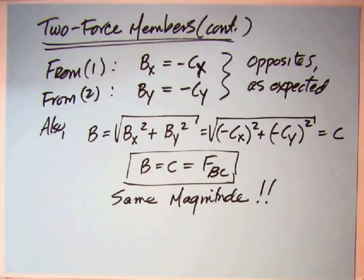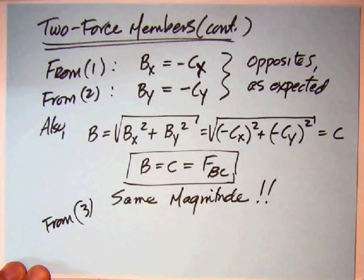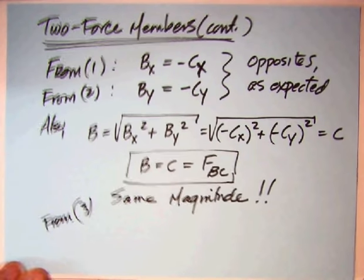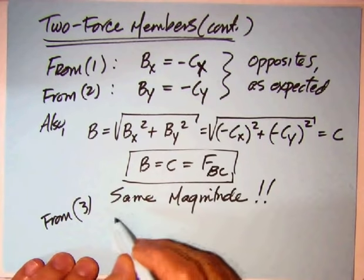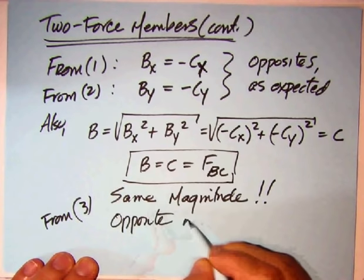So essentially what you've discovered by just manipulating the sum of the forces in X and sum of the forces in Y is you don't really have four unknowns, you've really got one unknown. That's really powerful. You don't have a Bx and a Cx and a By and a Cy, you just have the force in BC. That's really a biggie here.